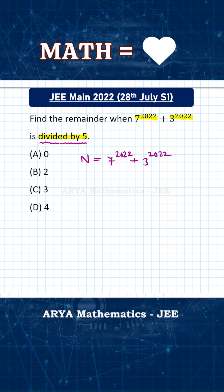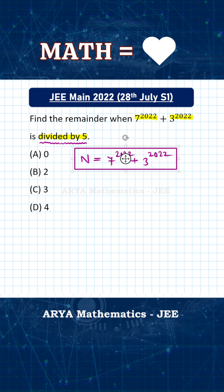When we divide a number by 5, the digit at the unit place decides the remainder. To find that digit at the unit place, we can use cyclicity to easily determine it.